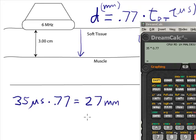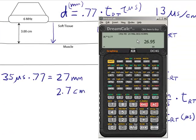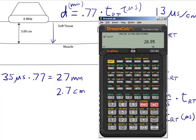And since I put in microseconds, this formula is set up to give you an answer in millimeters. If you needed centimeters, you'd have to move the decimal place over one place to get 2.7 centimeters.